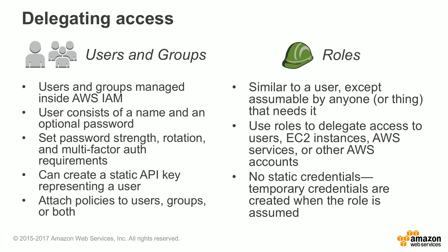When delegating access, you can do it two ways. You can use users and groups, or you can use roles. When using users or groups, they're managed within AWS IAM. Users consist of a name and an optional password or access key. You can set the password strength, rotation, and multi-factor authentication requirements for IAM users.